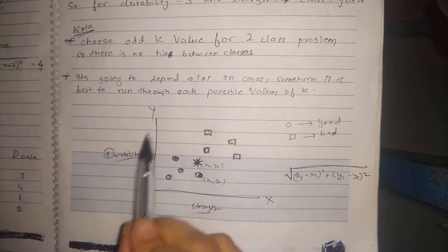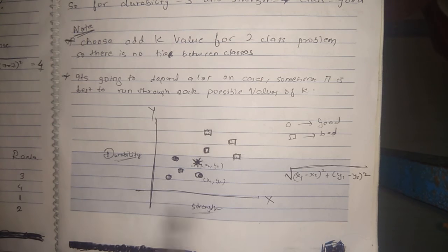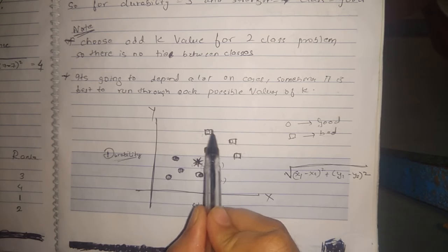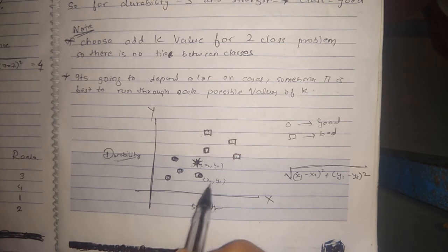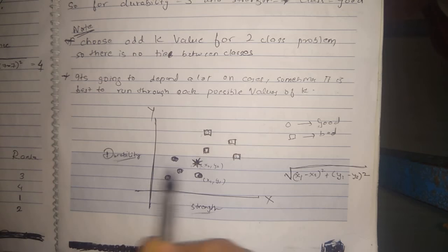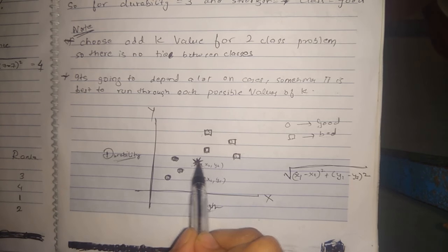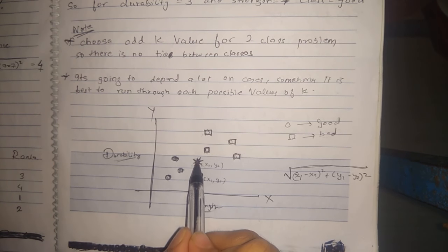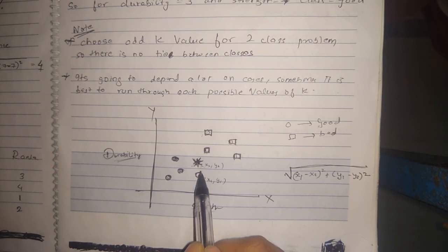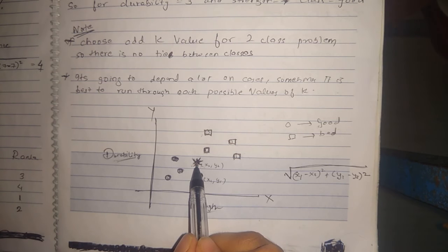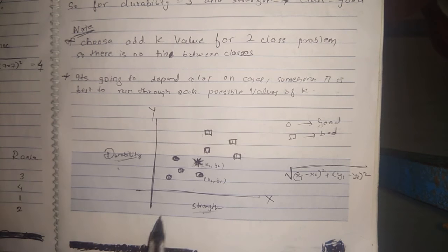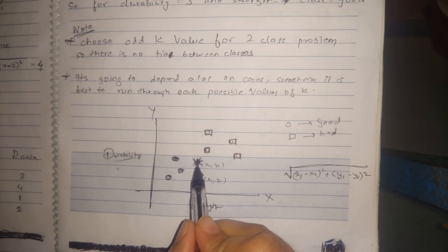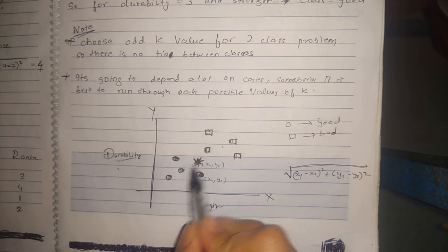Suppose there is a graph where all the squares belong to the class 'bad' and all the circles belong to the class 'good'. If there is a tissue paper and we don't know its class, then based on its durability and strength values we will find out whether it belongs to the bad class or the good class.